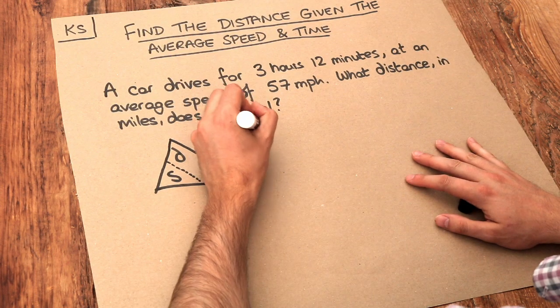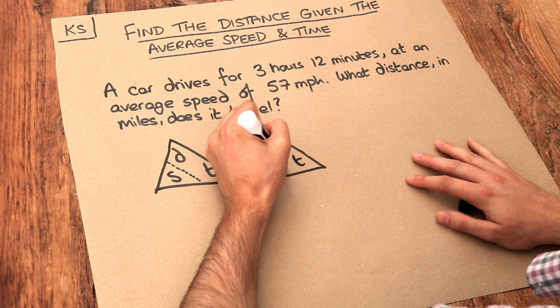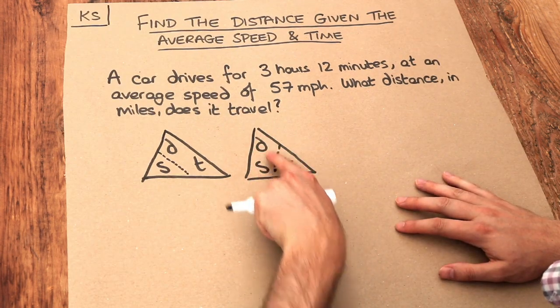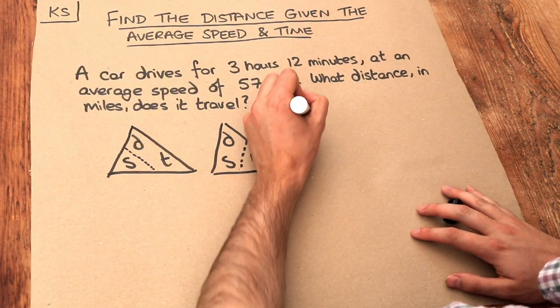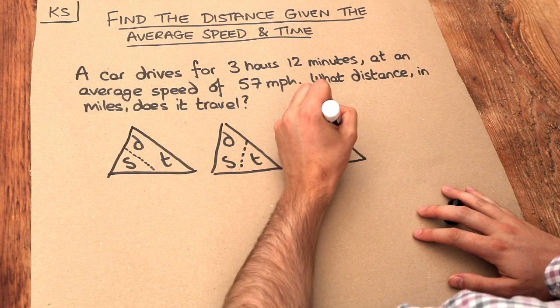In another video we saw that we could add the line like this to find the time, so the time is the distance over the speed, so the distance divided by the speed. But there's one final way you can put the line to get the D on its own, and it's like this.